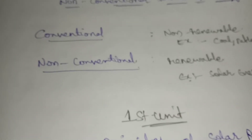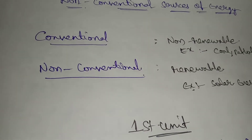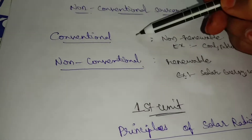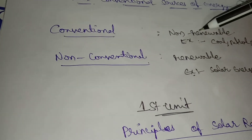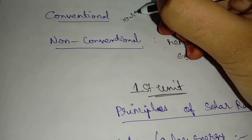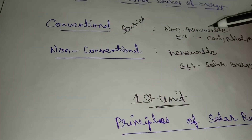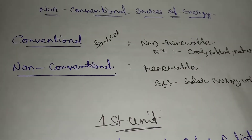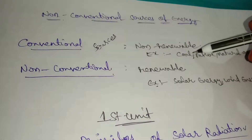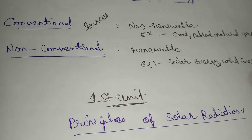First, going to the topic: conventional sources and non-conventional sources. Conventional sources are also called non-renewable energy sources. Examples include coal, petrol, natural gases, etc.